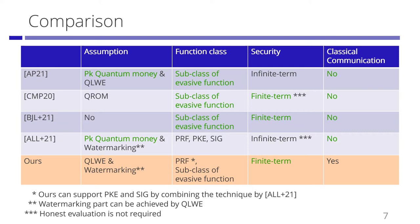Ananth and LaPlaca presented the notion of Secure Software Leasing and instantiated it for a subclass of evasive functions by using public quantum money and the LWE assumption against quantum adversaries. Their schemes achieve infinite-term security. Some concurrent and independent works improved the assumptions, but the function class is limited to a subclass of evasive functions. Ananth et al. achieved Secure Software Leasing for broader function classes, but they still need public key quantum money. Ours is the first Secure Software Leasing for broader function classes from standard assumptions.